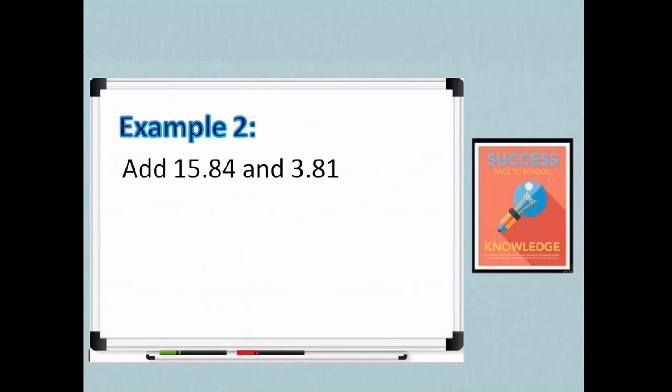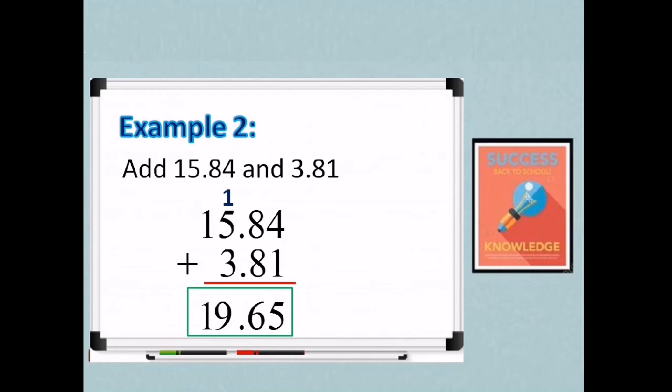So let's have another example. Add 15.84 and 3.81. So we can write it as 15.84 and 3.81. Again, kailangan ni-observe natin yung alignment according sa place values. And then pwede na tayo mag-add from right to left. So 4 plus 1 is 5. Then 8 plus 8 is 16. So carry 1. Then 5 plus 3 is 8 plus yung carry 1 na 1. So that is 9. And then, bring down 1. So therefore, our answer is 19.65.